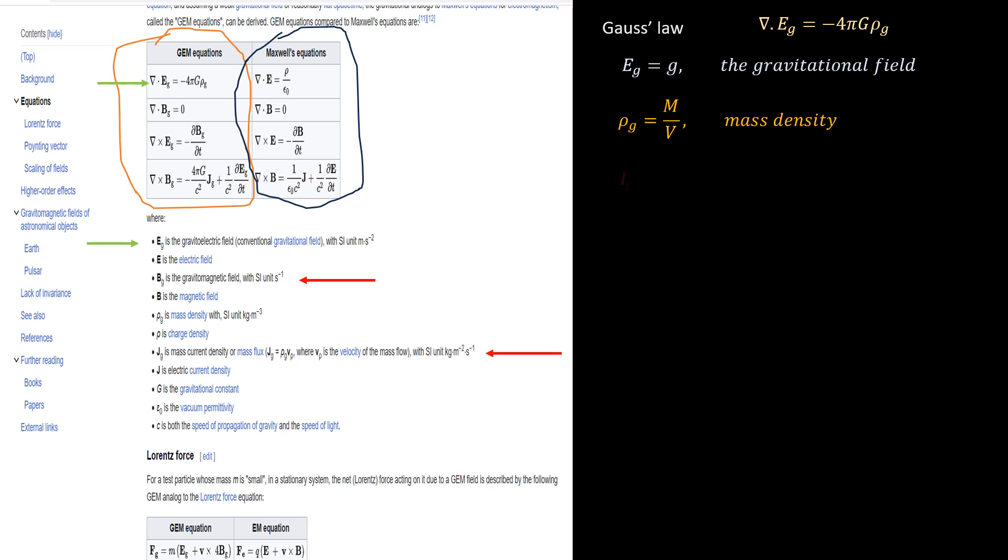Mass current is defined as the rate of flow of mass, and it is written mathematically as mass over time. Therefore, the mass current density is equal to I subscript G over A, which is the area. We know what gravitational potential is, and the formula is identical to that used in electricity, which is also called voltage.